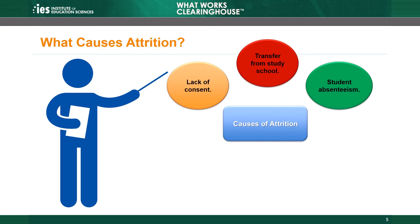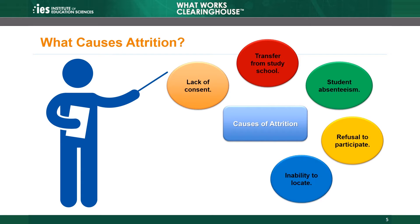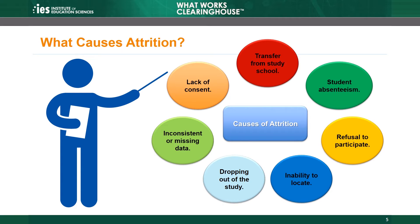Other causes of attrition include a student's refusal to participate, an inability to locate students who are enrolled in the study, students dropping out of the study, and inconsistent or missing data.